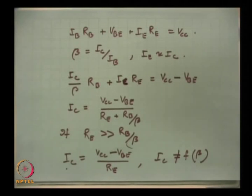There is a variation of this circuit called the voltage divider self bias circuit, which is the most widely used configuration. We will discuss that in the next lecture along with other biasing circuits.